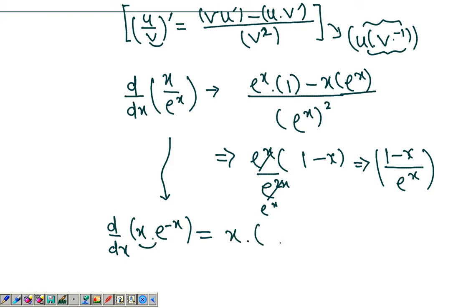The first function as it is, the derivative of the second which is negative e to the negative x, negative 1 here, plus - because you're applying the product rule - the second function as it is, the derivative of x which is 1.